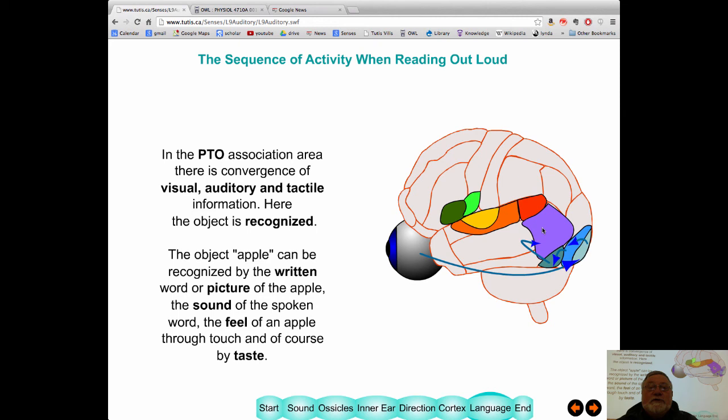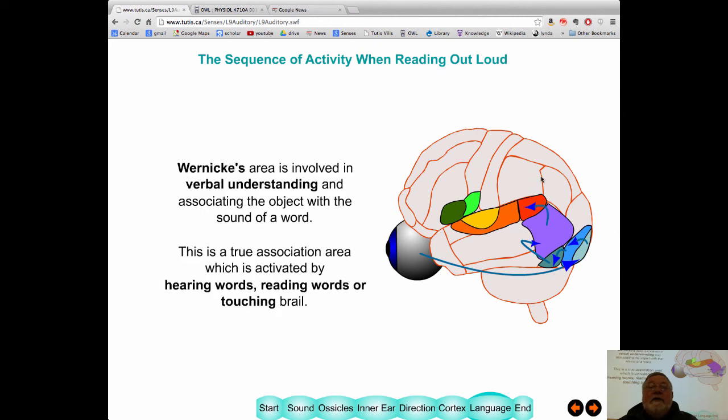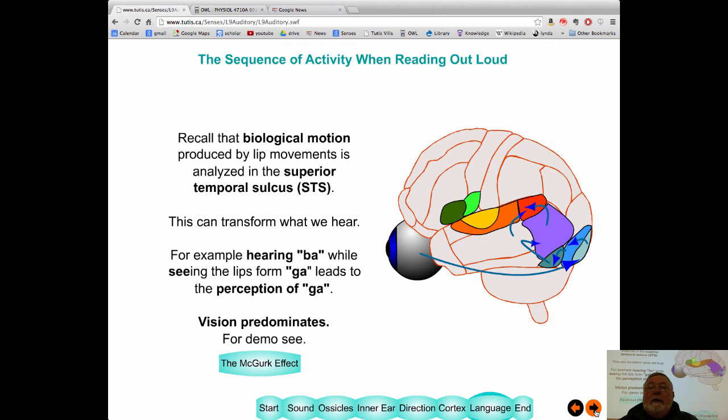Now, from there, you go to the PTO association area where visual, auditory, and tactile information is combined. And so, you could see an apple or a picture of an apple. It could be written down or you could hear somebody chewing on an apple. All those things would be able to denote this object called an apple. It would taste it. Then information flows through this Wernicke's area where the sound of a word is generated. Okay. It's your internal representation of what apple sounds like.